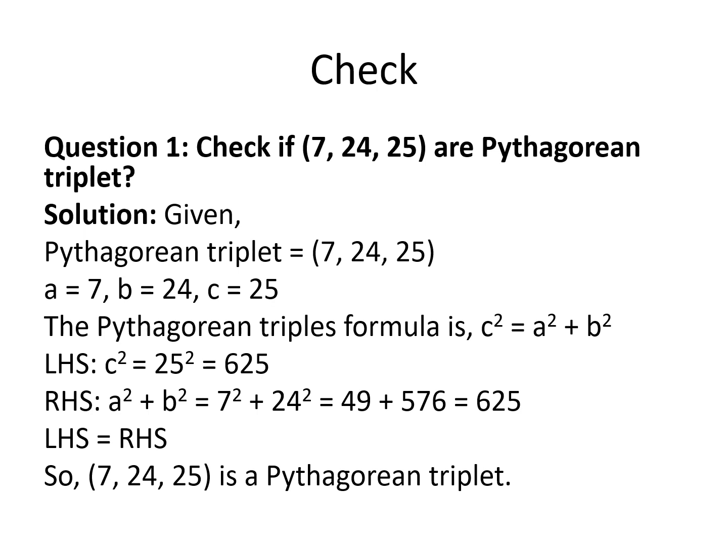Let us have question: check if (7, 24, 25) are Pythagorean triplets. Taking a = 7, b = 24, c = 25, using the identity or the formula c² = a² + b² which came by the statement of Pythagoras theorem. c² = 25² = 625.